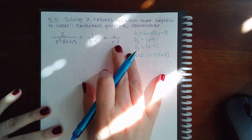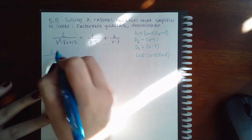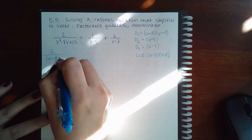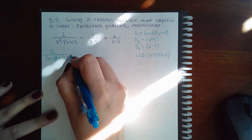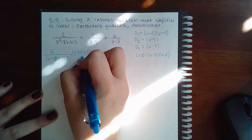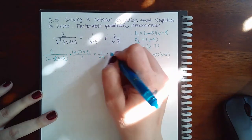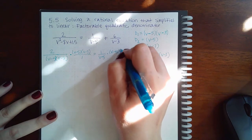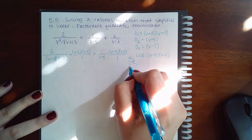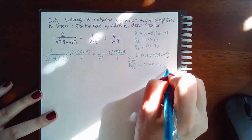You want to leave your binomials in parentheses when using your LCD, and use the factored version of your denominators when you rewrite this equation. So I'm going to have 2 over the factored version of that denominator, times the LCD over 1. Then plus 6 over V minus 3, times the LCD over 1.